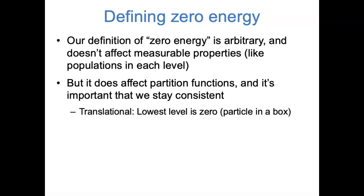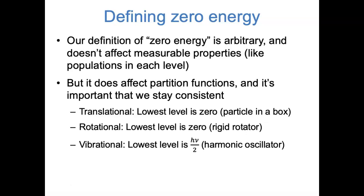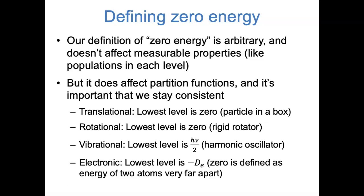As we work through different types of motion, our definition of zero energy typically comes from the quantum mechanics model used. For translational motion, the lowest energy level is defined as zero, as in the particle-in-a-box model. For rotational motion, the lowest energy is also zero, as in the rigid rotator model. For vibrational motion, the lowest energy is not zero — there's a zero-point energy of hν/2 in the ground state. For electronic energy, the ground state has energy negative De, the dissociation energy, where zero is defined as two atoms infinitely far apart.